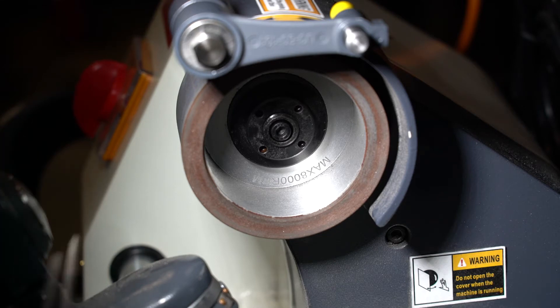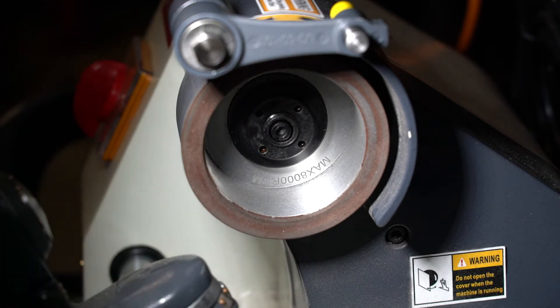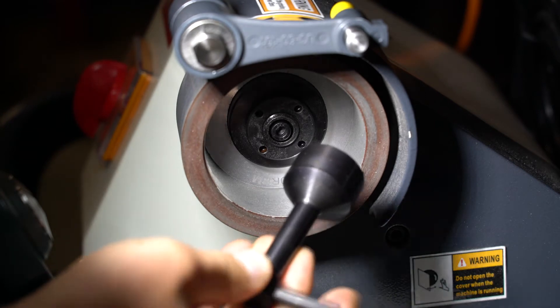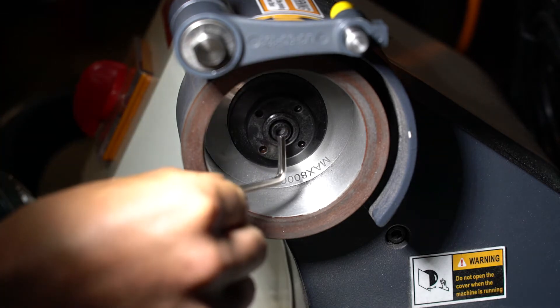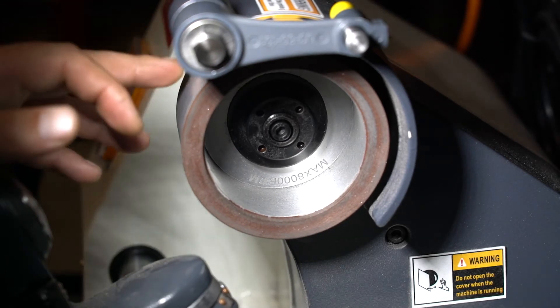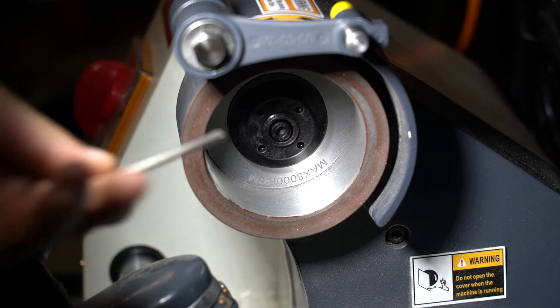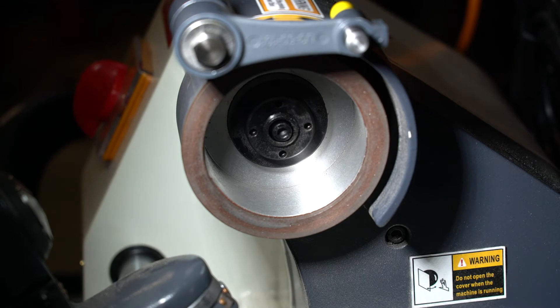If we look from this end, you will notice there is a hex bolt and a special nut with pinholes, and you will have received a special tool to undo that nut. Now undoing the nut will allow you to remove the diamond wheel, and undoing the hex bolt will also allow you to remove the diamond wheel. The difference is undoing the hex bolt will allow you to remove the diamond wheel along with the arbor of the shaft, whereas undoing the nut will allow you to remove the diamond wheel.